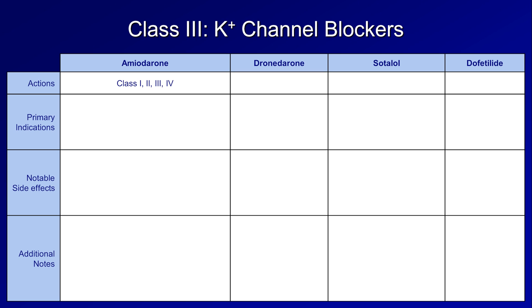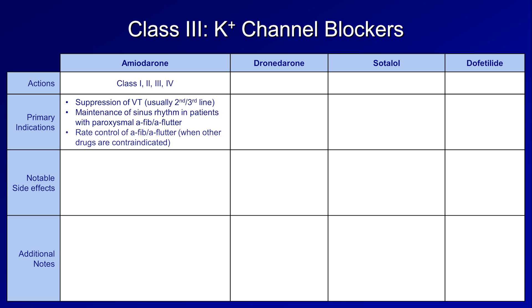Amio has several indications. It's used to suppress VT, though not typically as a first-line agent due to its extensive toxicity. It is used to maintain sinus rhythm in patients with paroxysmal AFib or AFlutter. It can also rate control AFib and AFlutter when other more effective drugs for this purpose, such as beta blockers and calcium channel blockers, are contraindicated. And although it is not typically used with this intent, amio can also cardiovert AFib or AFlutter back into sinus rhythm.